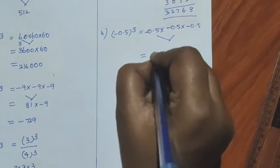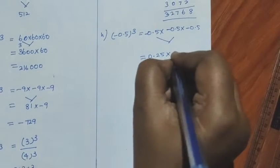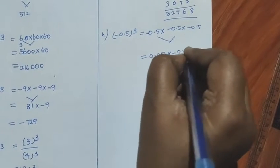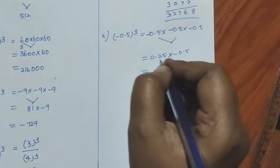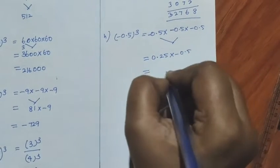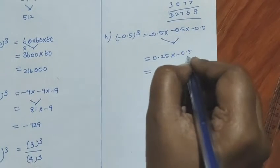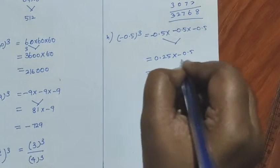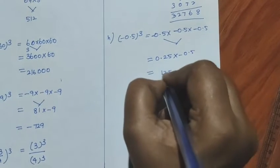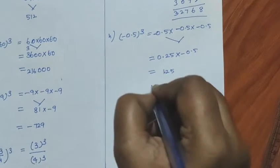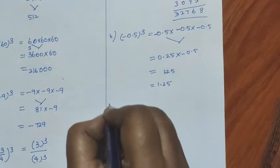How many digits? 25 into 5: we know it is 125. 5 fives are 25, 25 fives are 125. How many digits? 1, 2, 3 — three digits before the decimal. So our answer is minus 0.125.